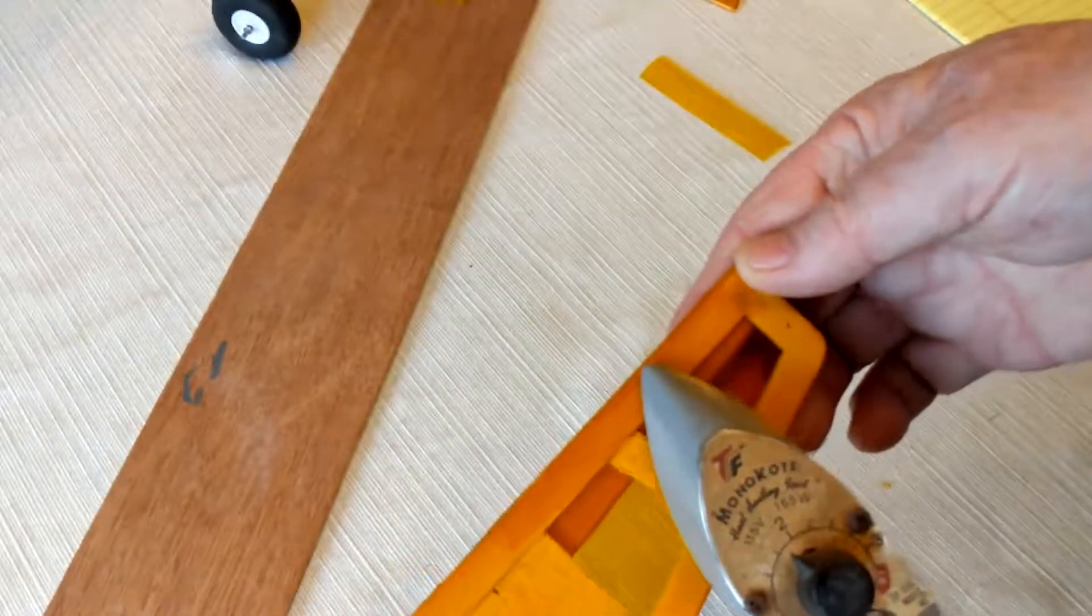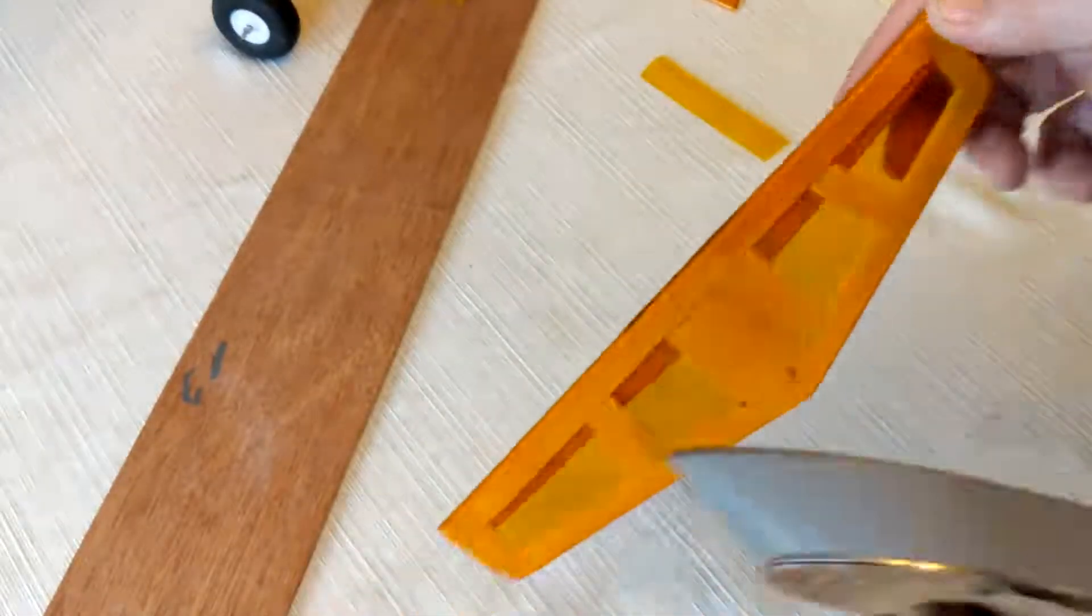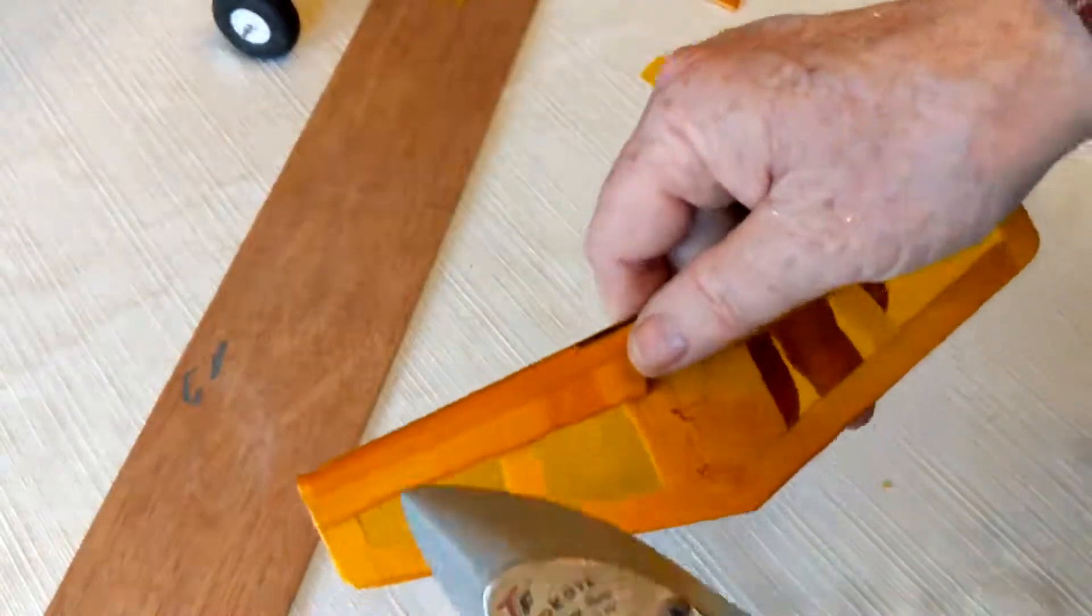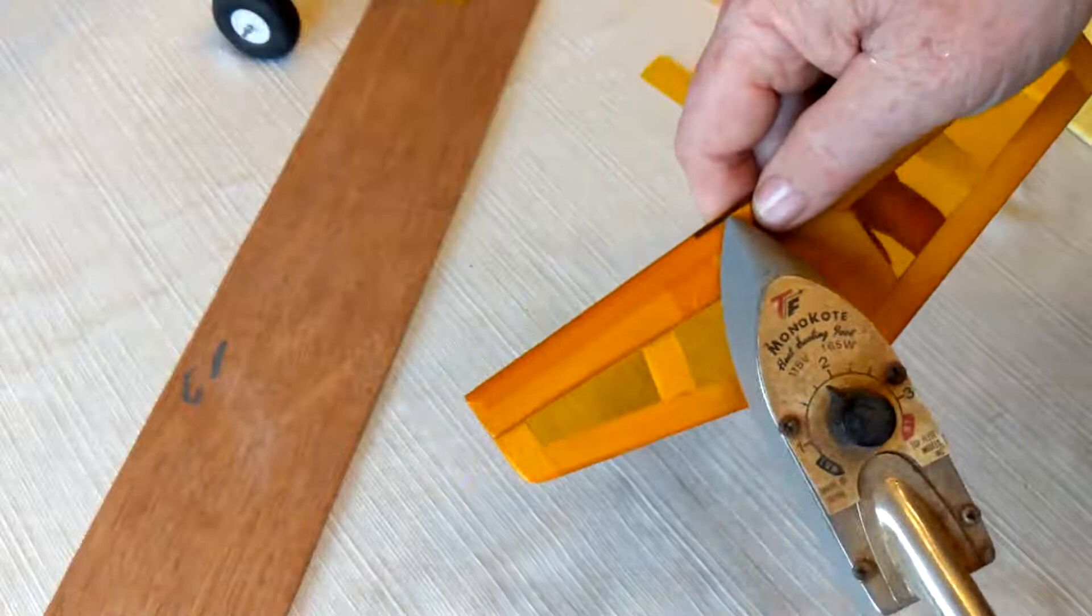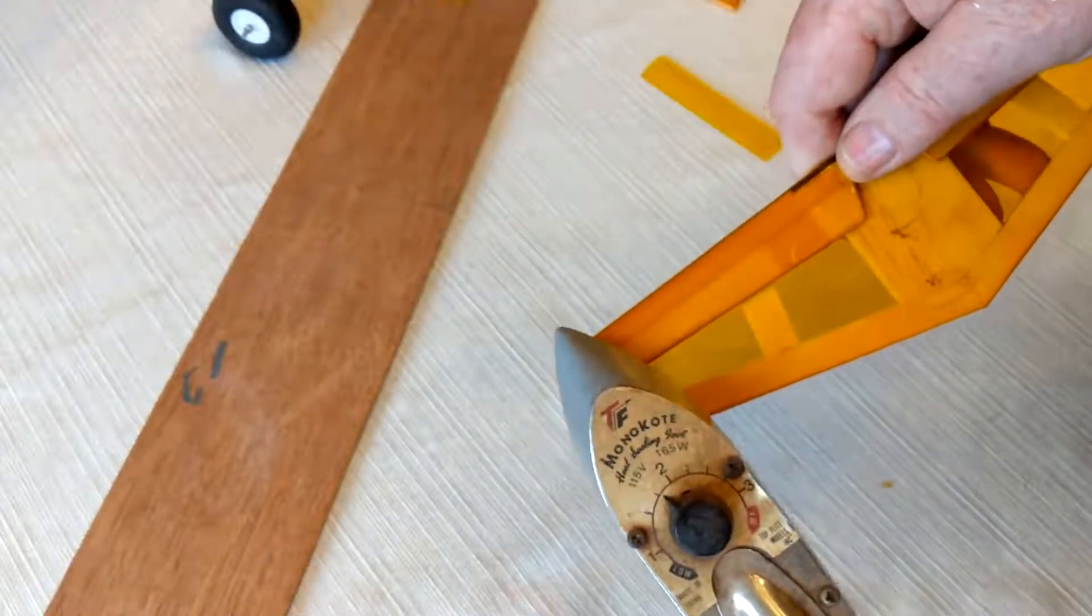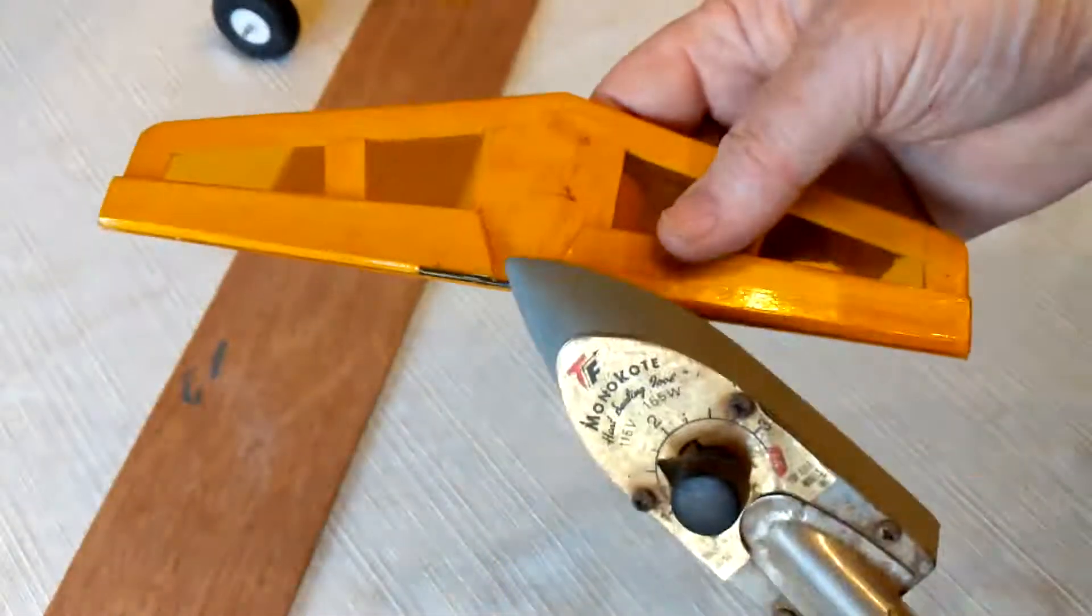And now we're going to tack down the corners. And just like the top, keeping it folded, we're going to run down, seal that outside edge, seal this outside edge.